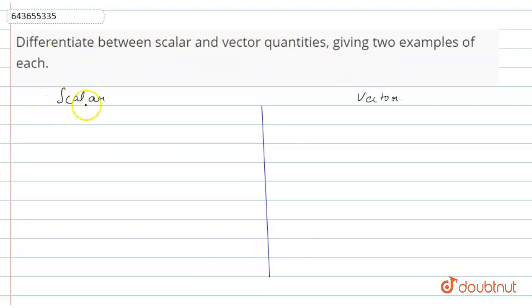First of all, scalar quantity. What is a scalar quantity? It is a physical quantity that is expressed only by magnitude. So it is expressed only by magnitude.